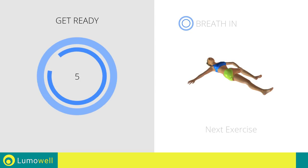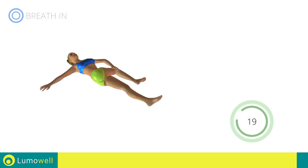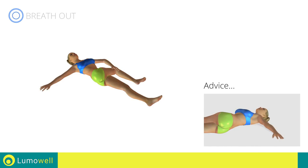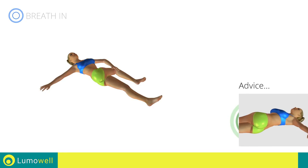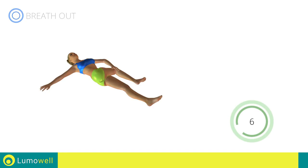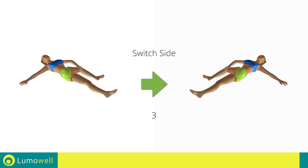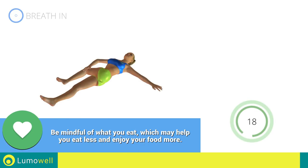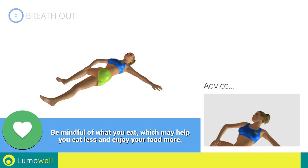Stop. Next exercise: spinal elongation. Go! Be sure not to lift your shoulders off the floor during the exercise. Switch sides in the shortest time possible. Go! Don't turn your head — try focusing on the ceiling.